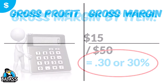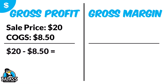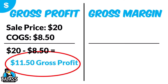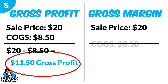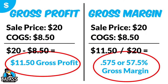Let's take a look at one more quick example. Say we have a sales price of $20 and cost of goods is $8.50. That gives us $20 minus $8.50, which is $11.50 of gross profit. Now to find the gross margin, we take our gross profit dollars of $11.50 and divide by total sales of $20. That gives us 0.575 — move the decimal over two spots and our gross margin percentage is 57.5%.